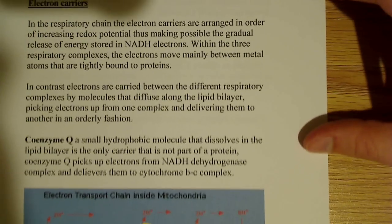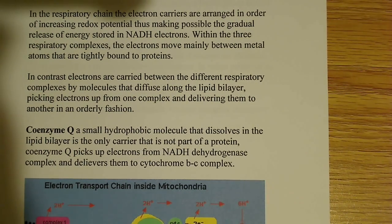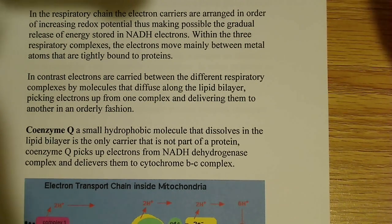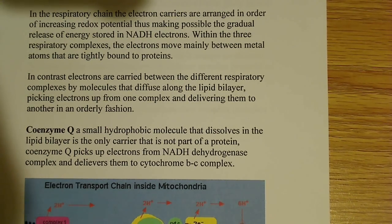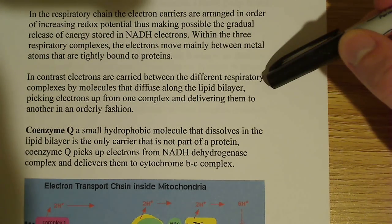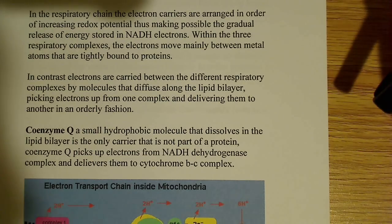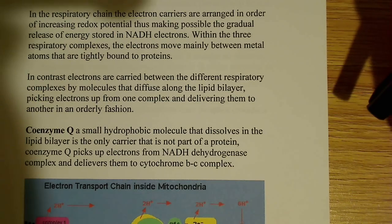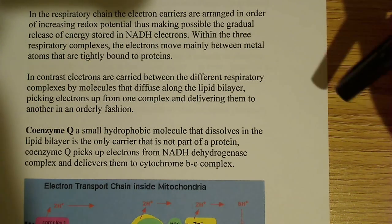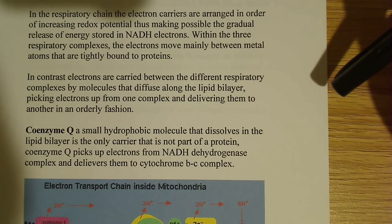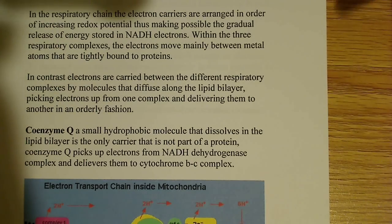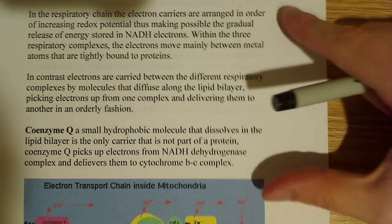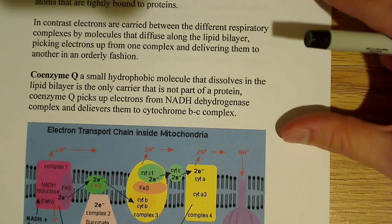In contrast, the electrons are carried between the different respiratory complexes by molecules that diffuse along the lipid bilayer, picking electrons up from one complex and delivering them to another in an orderly fashion. Essentially what I'm talking about here is coenzyme Q, and also cytochrome C, because coenzyme Q specifically diffuses through the lipid bilayer.